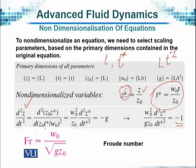The ratio w₀ over square root of g into z₀ is known as Froude number. Froude number is a ratio of inertial forces or momentum forces divided by gravitational forces because they are the two that are occurring and so we take the square root here of this.